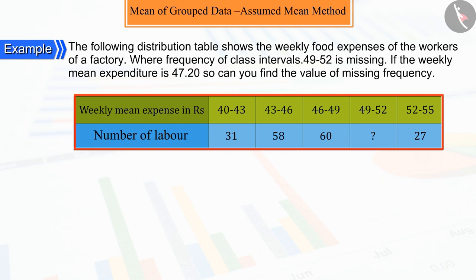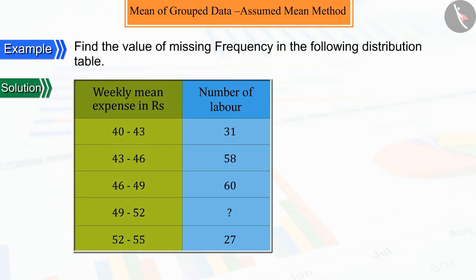Come, let's try to solve it. The given distribution table is a system of grouped data where the width of the class interval is 3. Let f be a missing frequency whose value we have to find out.